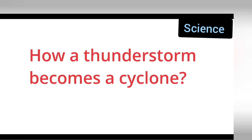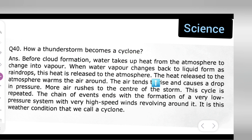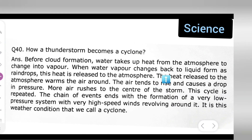In today's class of science for class 7, today's question is: how does a thunderstorm become a cyclone? Let us see how the thunderstorm becomes a cyclone. Before we get to the answer, take down the question first.